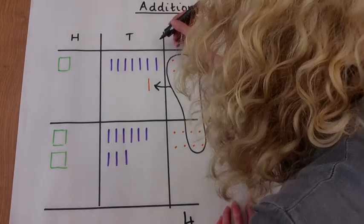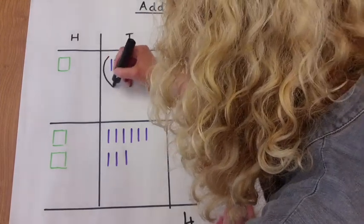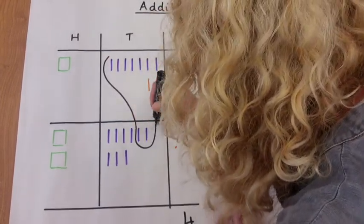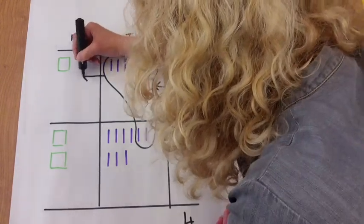Moving on to the tens column, we've got 7 plus 9 plus 1, which is going to make 17. So we need to regroup 10 of those tens into the hundreds column.